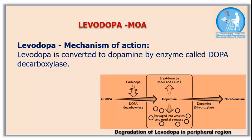Levodopa is absorbed and crosses the blood-brain barrier and enters the brain where it is converted to dopamine. However, there are obstructions during its movement — only a fraction reaches the brain, as levodopa gets degraded by decarboxylation to dopamine in peripheral tissues, particularly the gut wall, liver, and kidney. This causes reduction so that only about 1% of the oral dose reaches the brain. The dopamine converted peripherally produces unwanted side effects. That is why levodopa comes combined with carbidopa, which inhibits degradation of levodopa in the peripheral region.